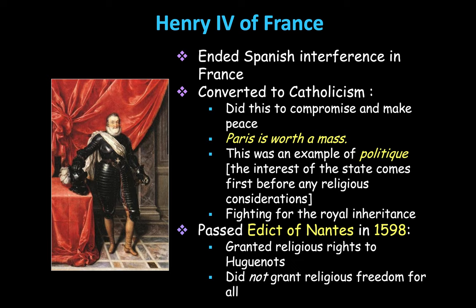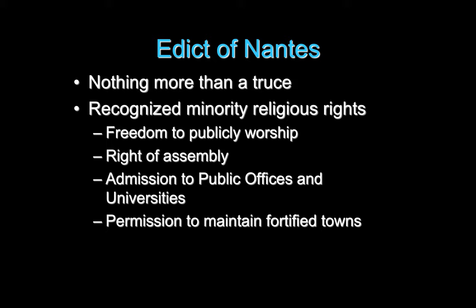The Edict of Nantes was essentially a truce — it recognized minority religious rights but did not give Huguenots full equality. Henry Navarre was unwilling to grant complete equality because France is a predominantly Catholic country and he worried about Catholic backlash. It was his way of calming things down and creating a workable peace between the two sides.